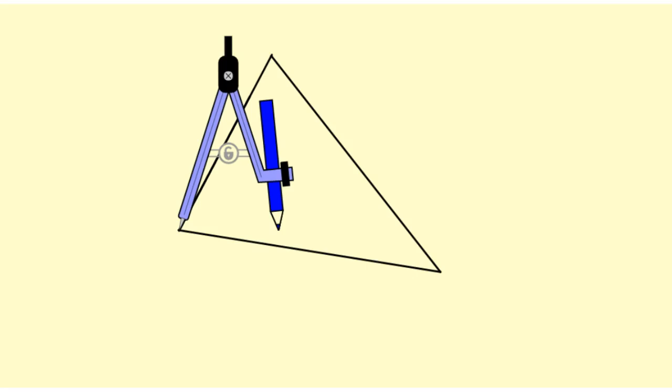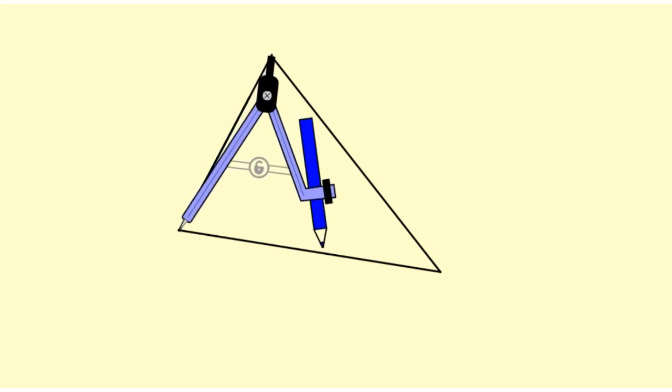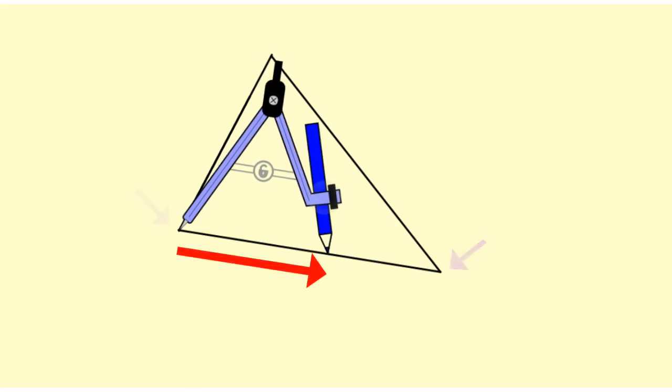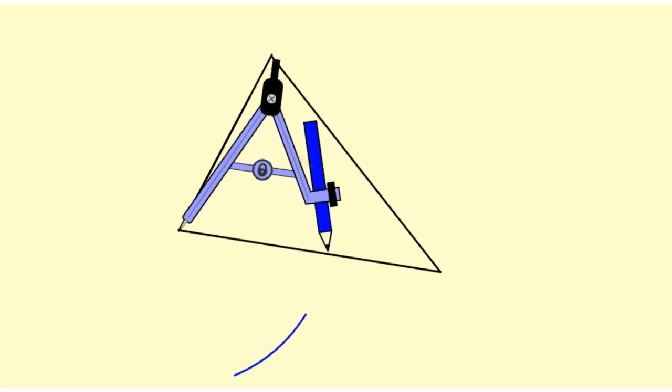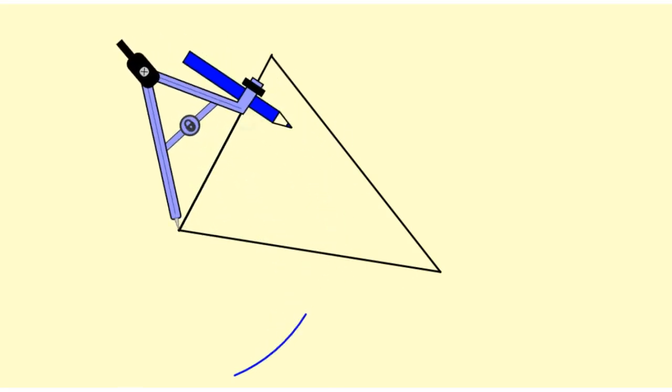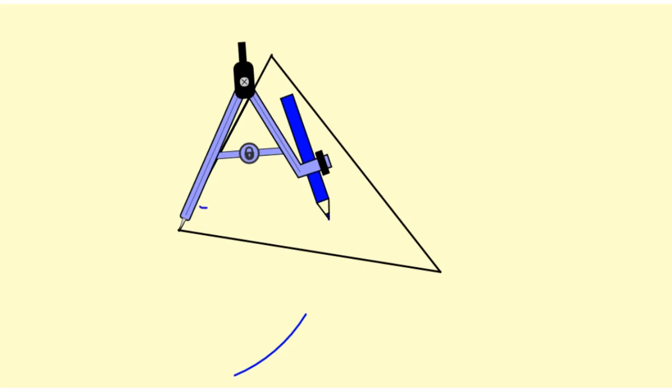Remember that when we construct the perpendicular bisector, we need to make sure that our compass is open over halfway between the two endpoints of the segment. Then what we do is draw an arc below and above each of those endpoints.